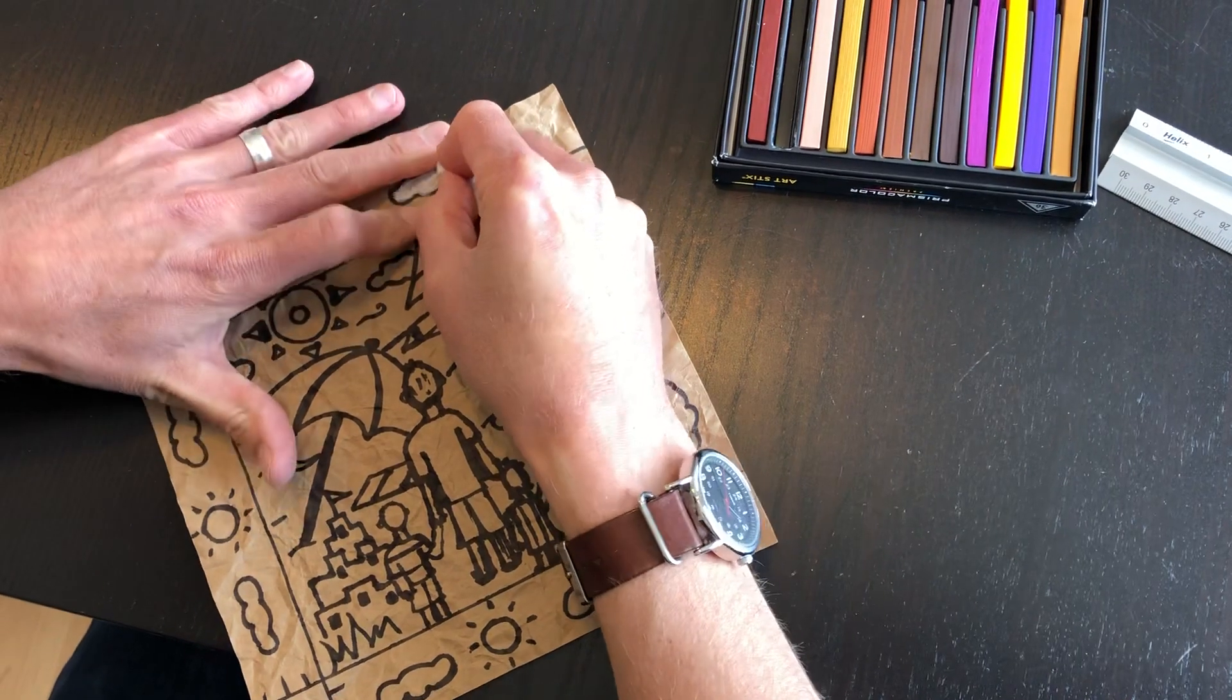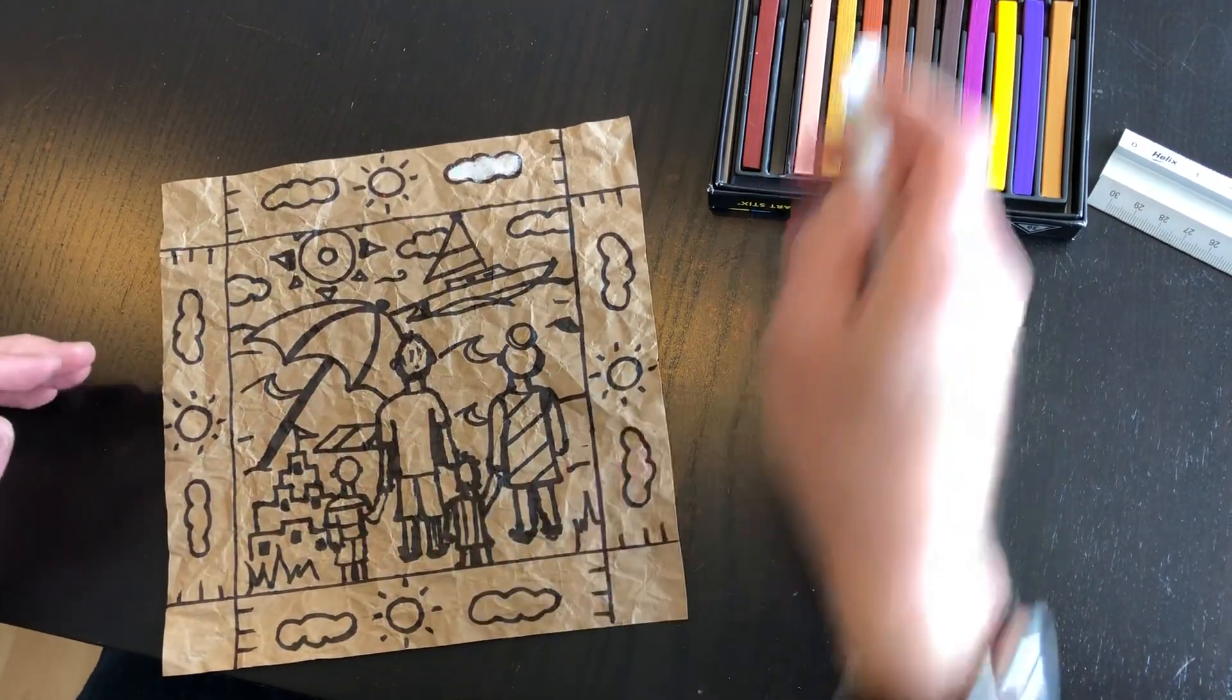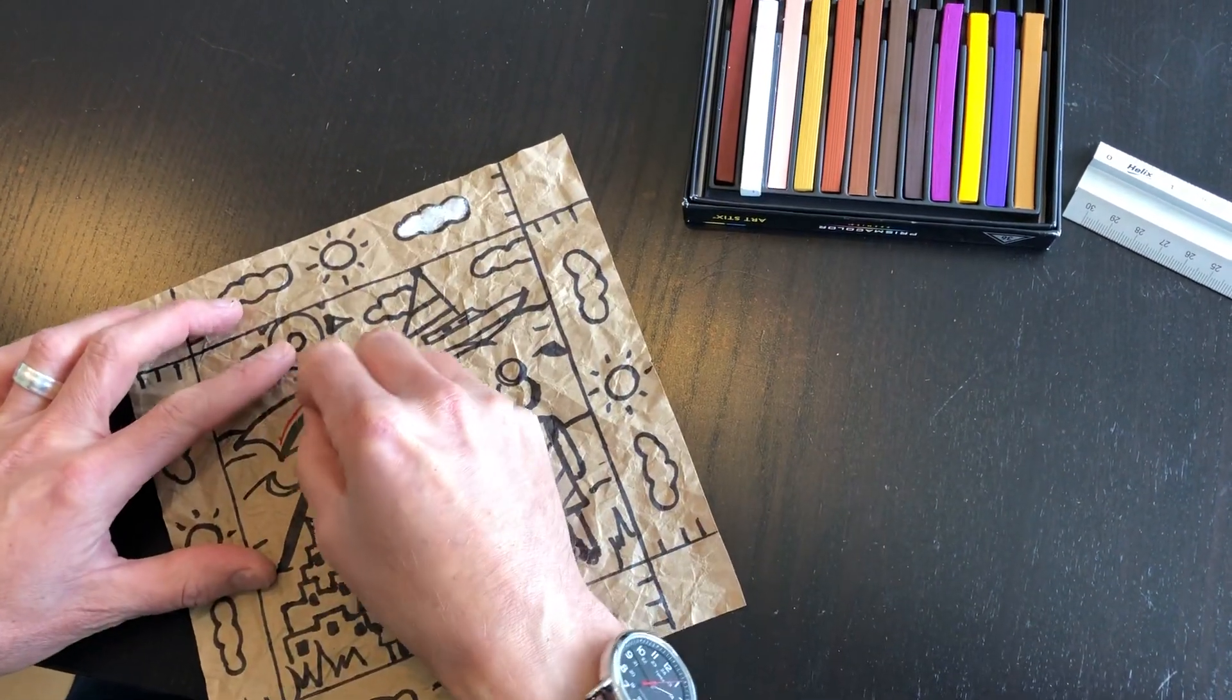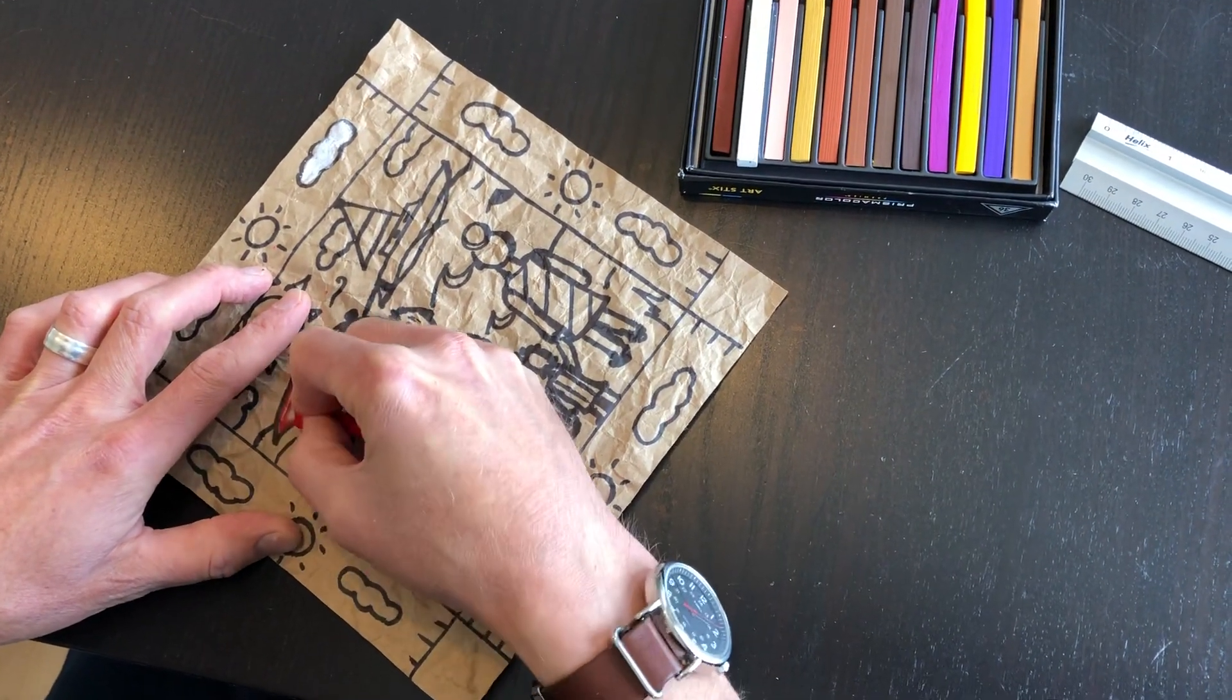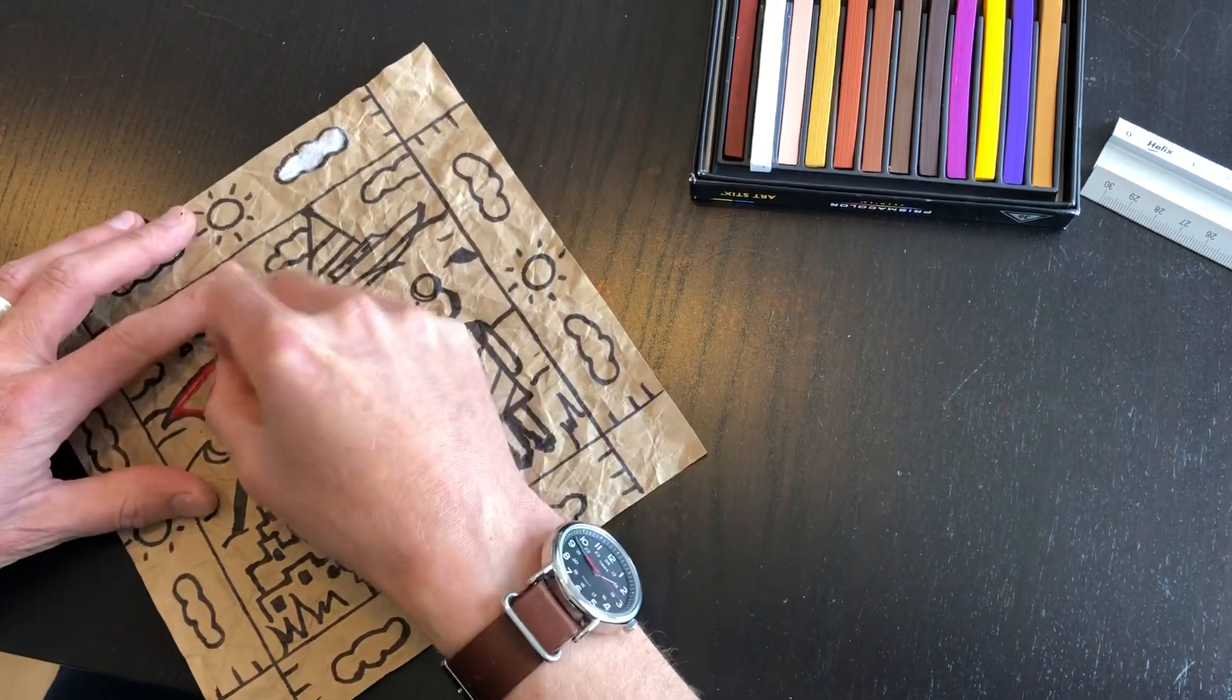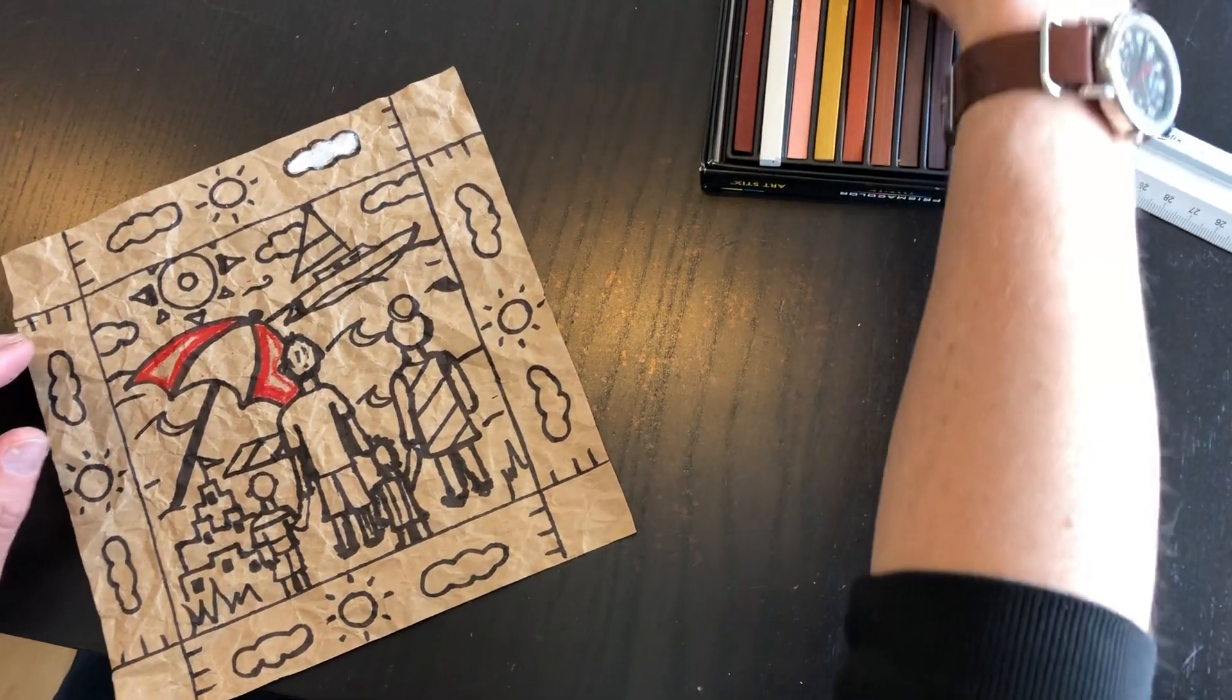The nice thing about using brown paper is that if you press hard, bright colors and dark colors will show up on this brown paper. I'm not going to color all of this, but instead of just coloring this all one color, if I outline it with one color and then fill it in with another one, it doesn't take a lot of extra time. But it gives it more visual interest and is more fun to look at.